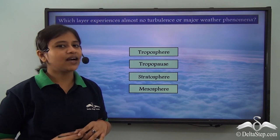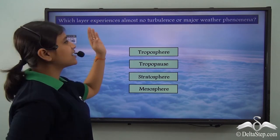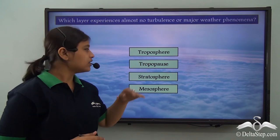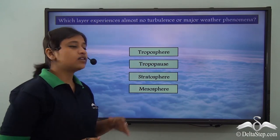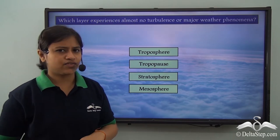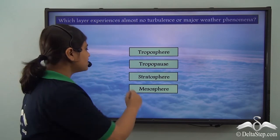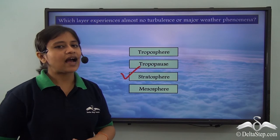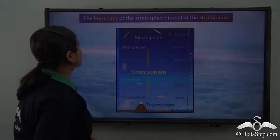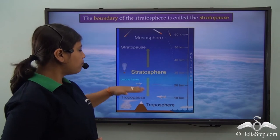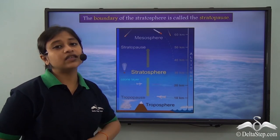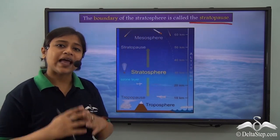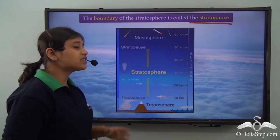Which layer experiences almost no turbulence or major weather phenomena? The answer is the stratosphere, due to the absence of clouds and very little dust particles and water vapour. Just like the tropopause is the boundary of the first layer, the stratopause is the boundary or end of the second layer, the stratosphere.